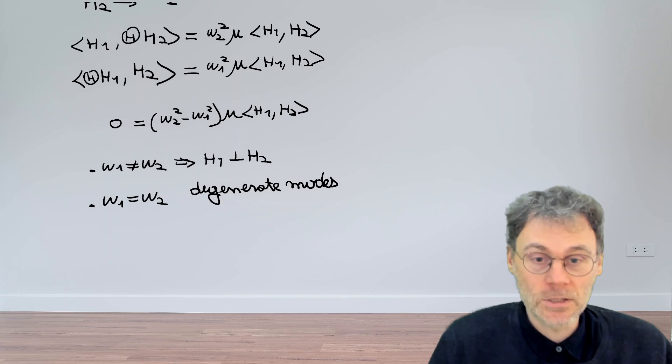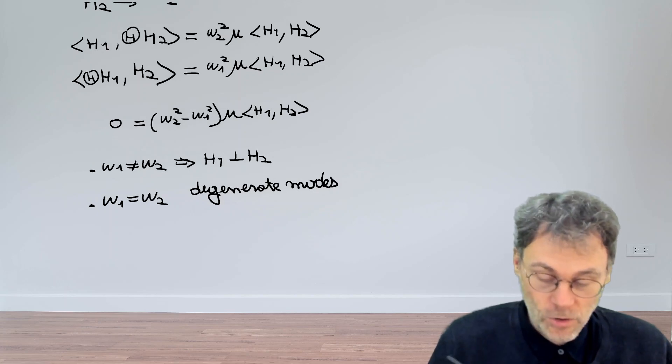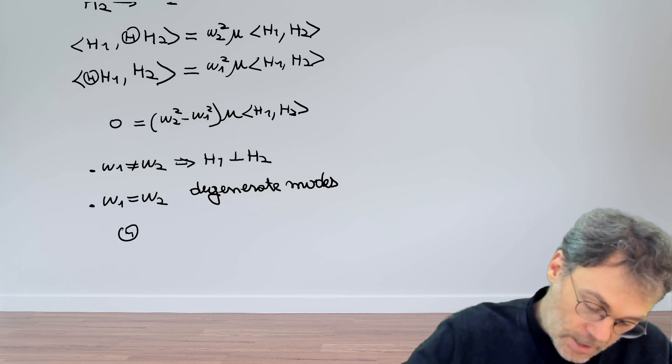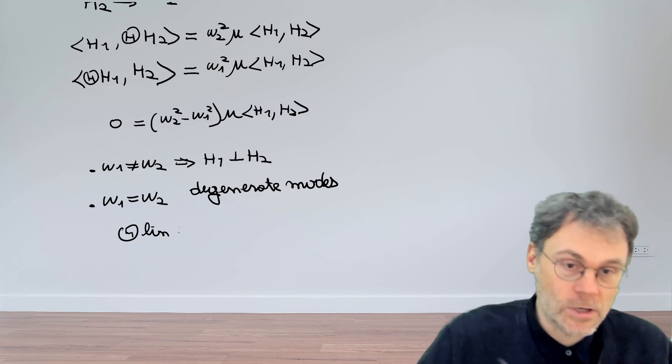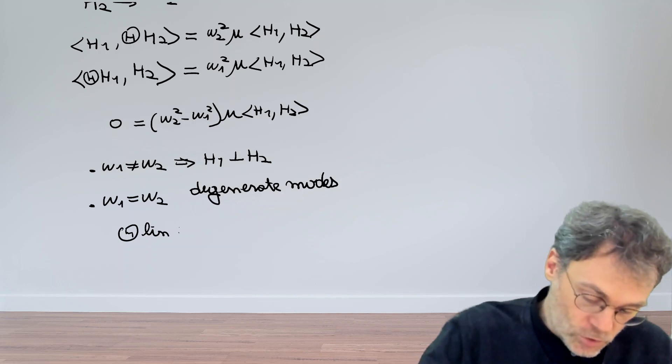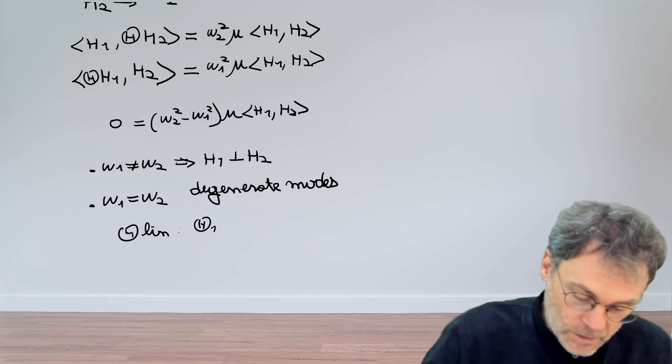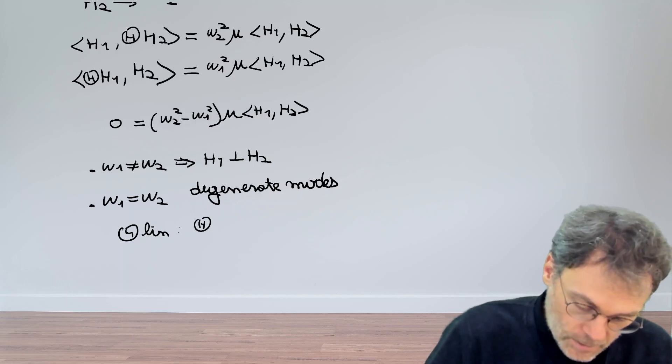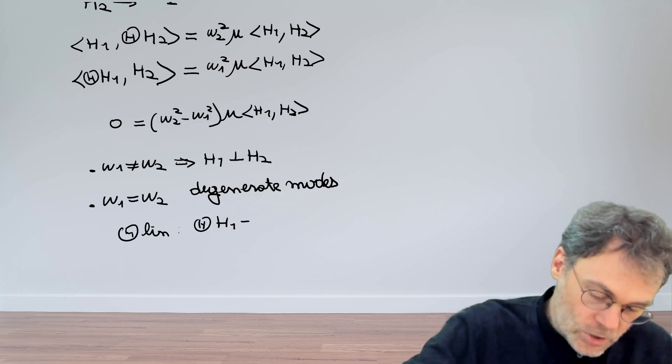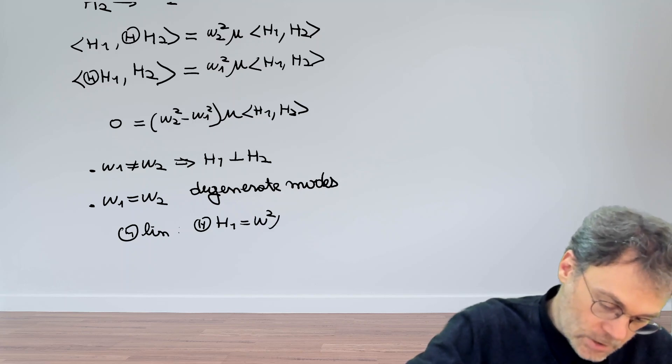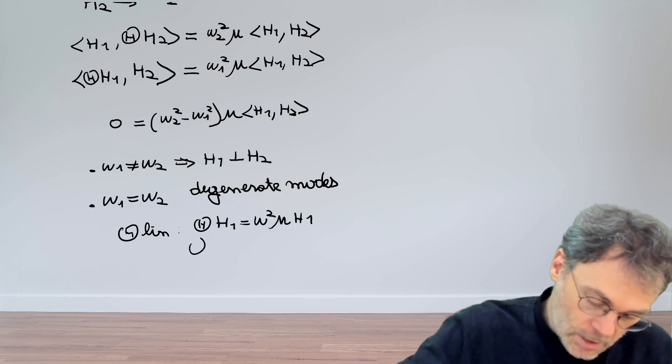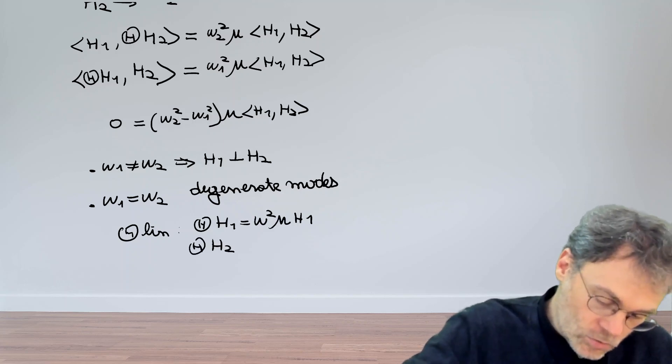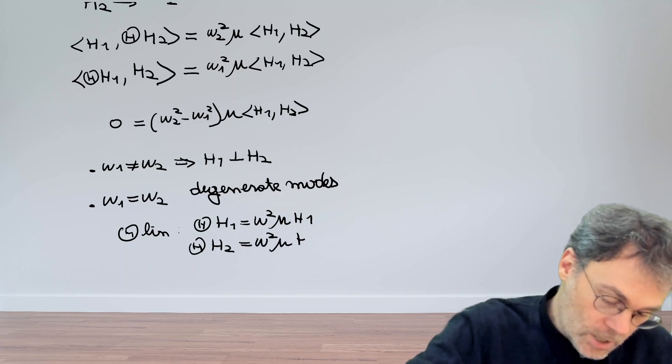If we're dealing with degenerate modes, since our operator theta is actually a linear operator, this means that if we have a solution H1, so if theta H1 is omega squared mu H1, and also theta H2, the same eigenvalue omega squared mu H2,